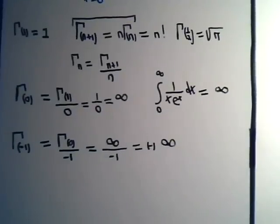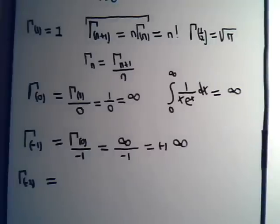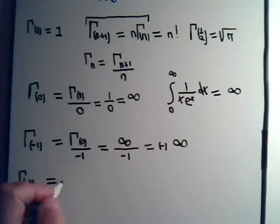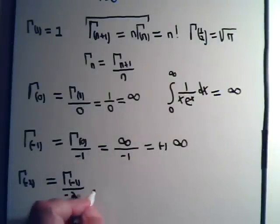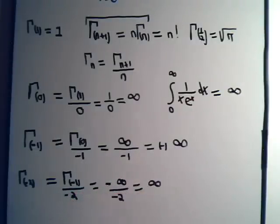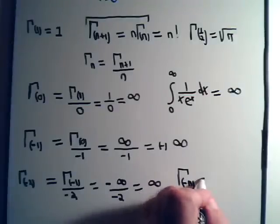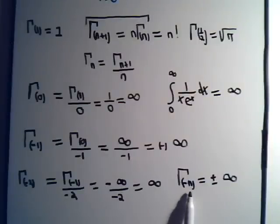What about the gamma function of negative 2? That would equal the gamma function of negative 1 divided by negative 2, which equals minus infinity divided by minus 2, giving plus infinity. So if n is a whole number, the gamma function of minus n will equal plus or minus infinity depending on whether n is an odd or even whole number.